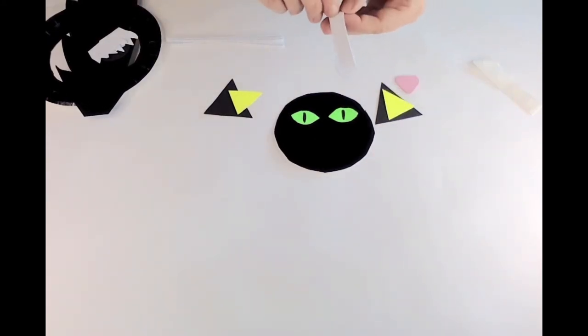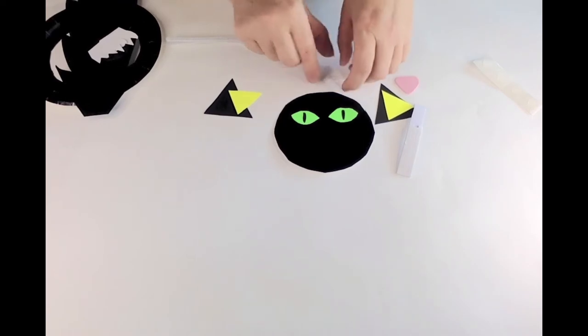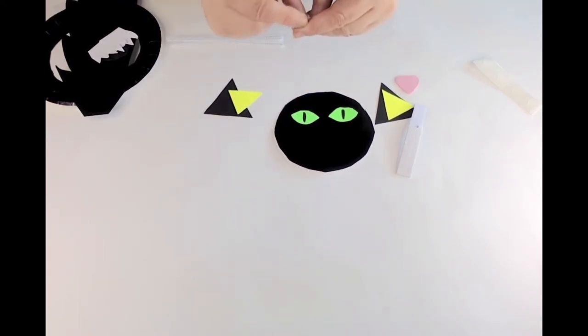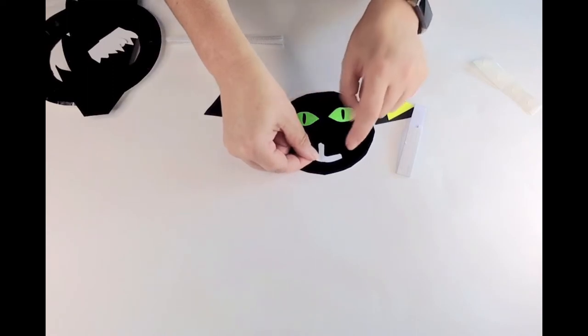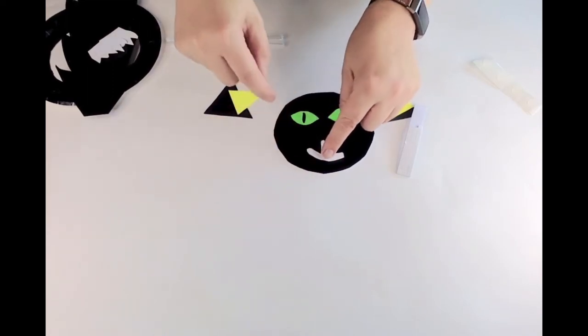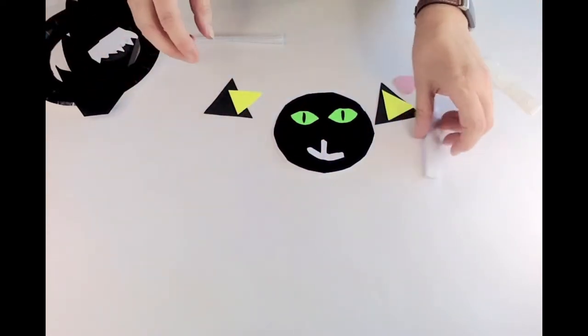I think the next thing I'm going to do is to put the little mouth on before I put the nose and the whiskers. So I'm going to position it there on mine, but you can put it to the side however you like.